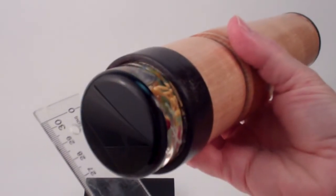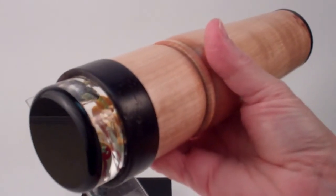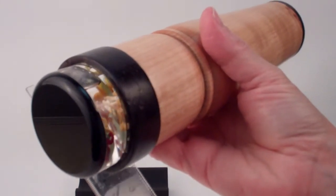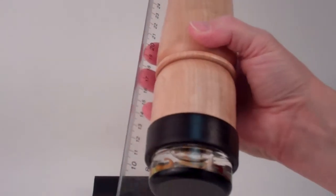The object chamber is two and a quarter inches in diameter, and at its widest point, the kaleidoscope is two and three-quarter inches in diameter. It has an overall length of nine inches.